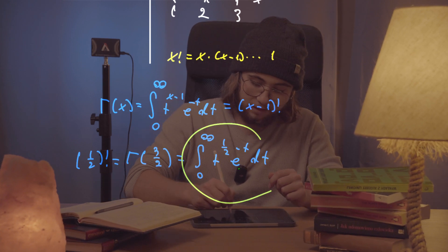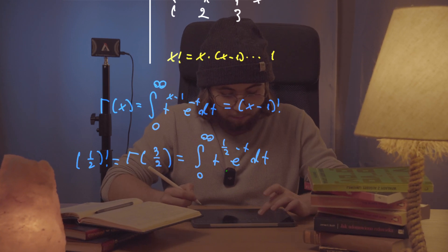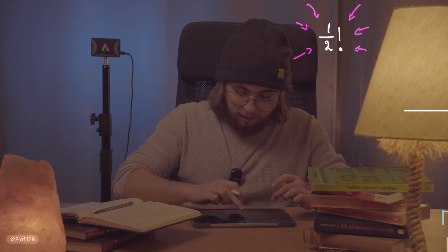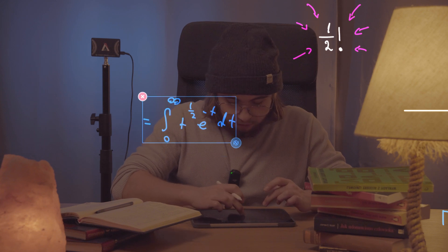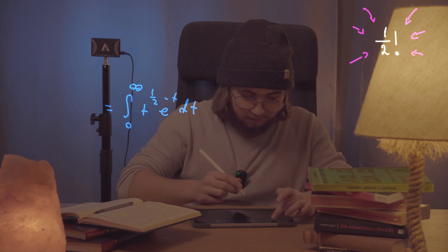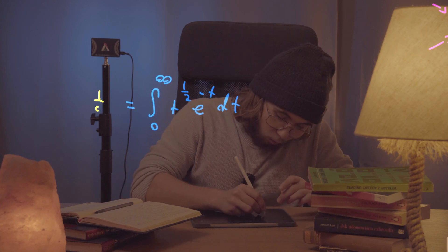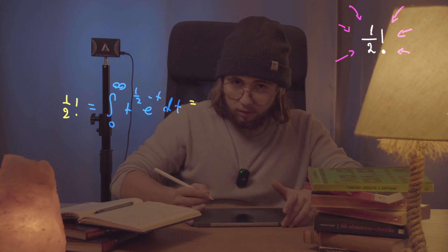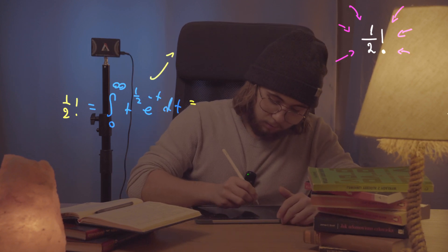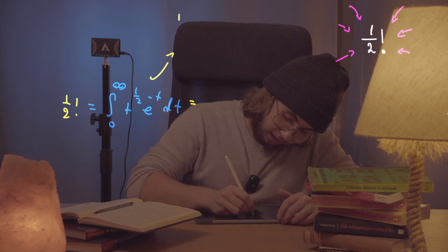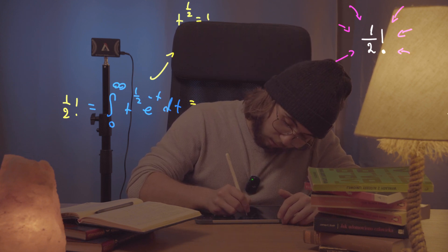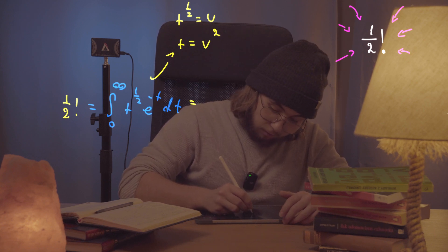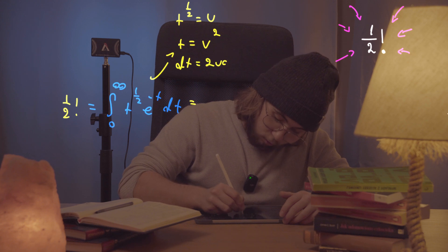Let's go ahead and evaluate this integral now. This is going to be a tough integral — that is the 1 over 2 factorial. First, I would like to make a substitution. I don't really like the square root of t in there, so I'll let the square root of t equal some u. This means t equals u squared, and dt changes to 2u du.